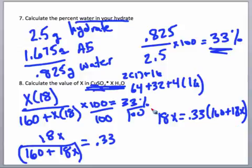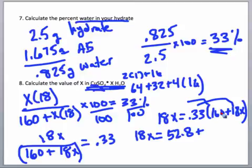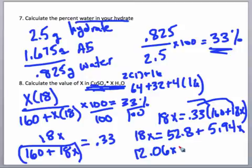We are going to distribute. So I'll have 18x is equal to 52.8 plus 5.94x. I'm going to subtract 5.94x from each side, and I will get 12.06x is equal to 52.8, and when I finish that division, I will get x is equal to 4.4.